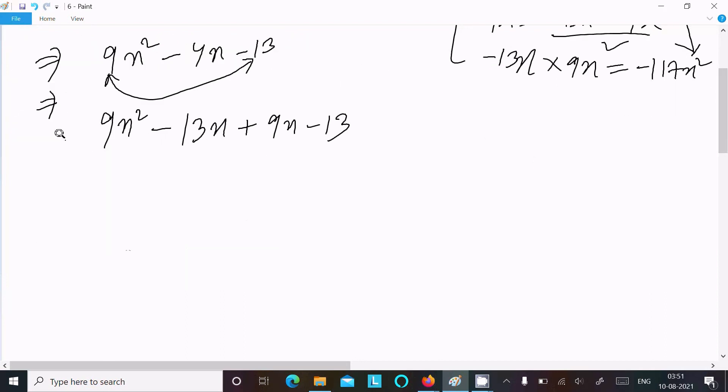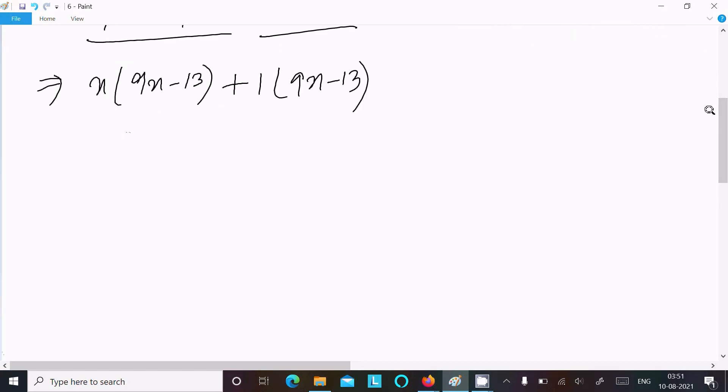Now thereafter, take the common. Between these two, x is the common, so we can write x(9x - 13). Between these two, 1 is the common, so 1(9x - 13). Now let's take here 9x - 13 common between these two, so here you can get (x + 1).